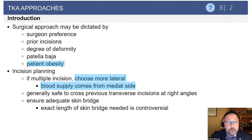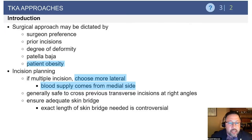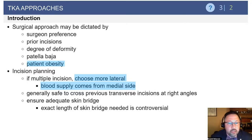Moving on to approaches, surgical approaches are dictated by surgeon preference, prior incisions, degree of deformity, and patient's body habitus. When there are multiple incisions about the knee, you definitely want to choose the more lateral incision because the blood supply comes from the medial side. Choosing the wrong incision can cause skin loss, necessitating a flap.